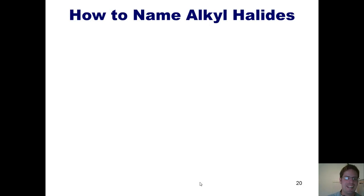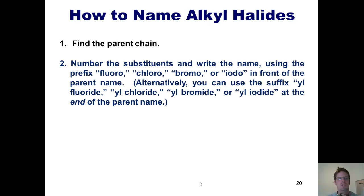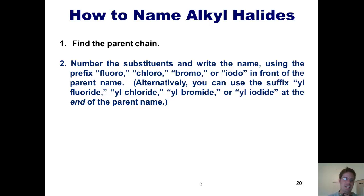Here are the steps for naming an alkyl halide. Step one, find the parent chain. Step two, number the substituents and write the name using the prefix fluoro, chloro, bromo, or iodo in front of the parent name. Alternatively, you can use the suffix alkyl-fluoride, alkyl-chloride, alkyl-bromide, or alkyl-iodide at the end of the parent name.